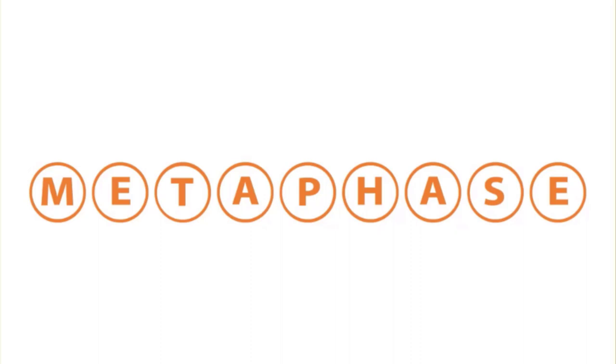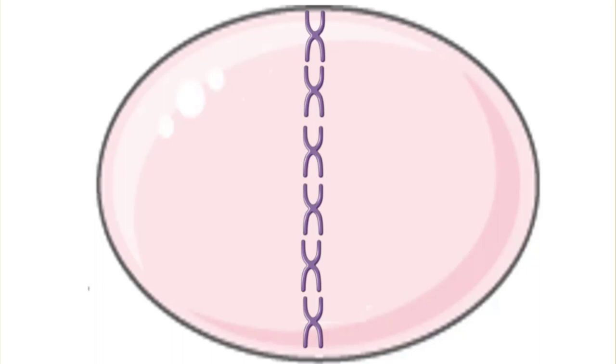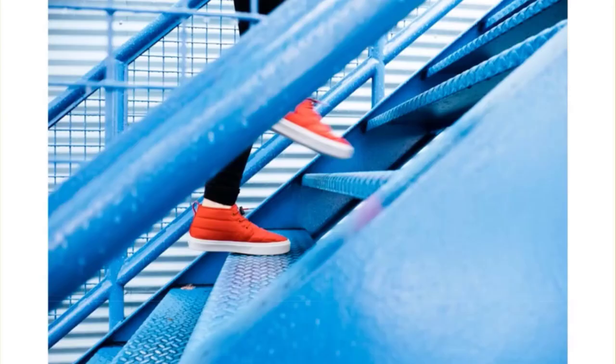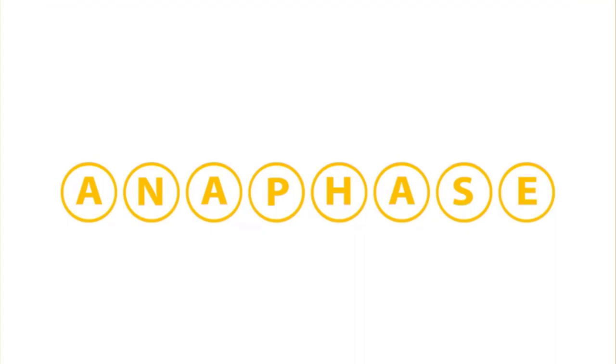Metaphase: chromosomes line the plate, get pulled apart. Sister chromatids travel far away from each other to opposite ends. Every step the cell takes to telophase.